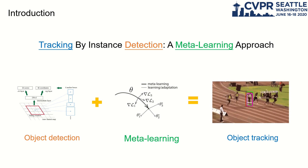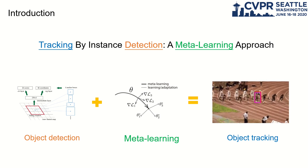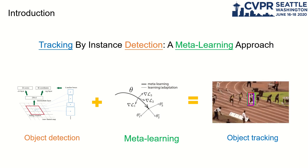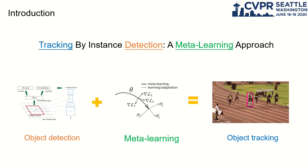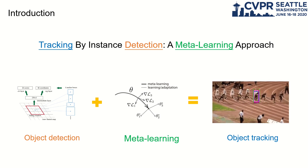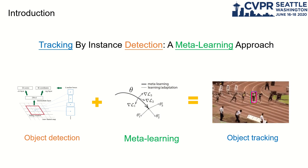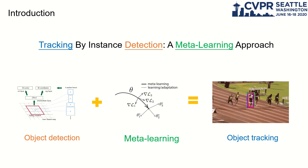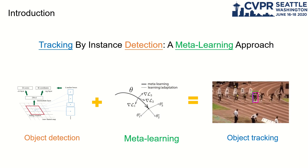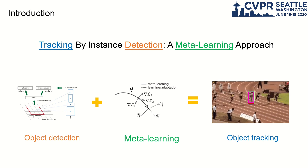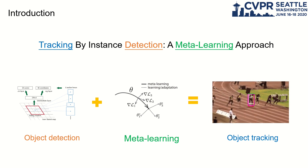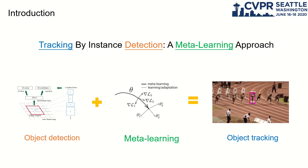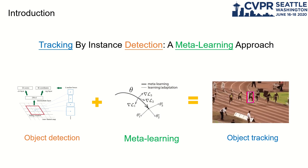There are three key words in this title: tracking, detection, and meta-learning. In this work, we would like to build the connection between these three tasks. Object tracking can be viewed as object detection coupled with meta-learning.